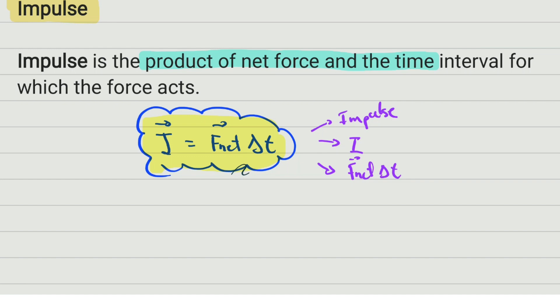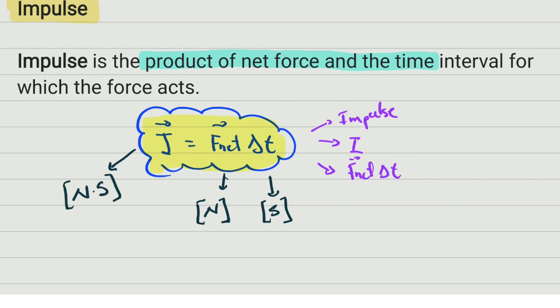The second important thing is the unit. The unit of impulse is the product of force and time. The unit for force is newtons, the unit for time is seconds (SI units), and therefore the unit for impulse is newton-seconds. You read it as newton-second, not newtons per second — newtons per second would mean dividing.